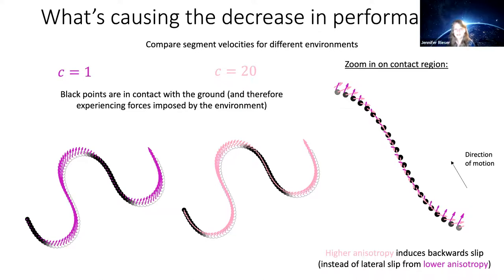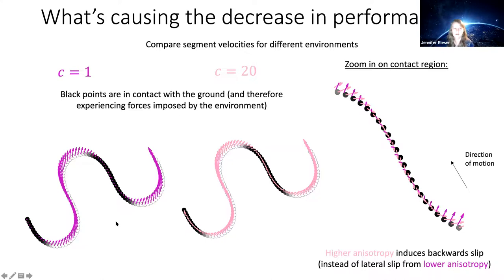Having lower anisotropy actually enables the animal to slide lateral to the body without hindering performance as much. We think this isotropic structure really is helpful in allowing animals to move more effectively in these environments.